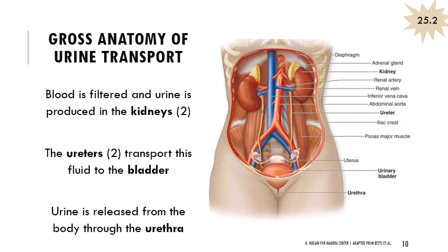Getting into how urine is transported through the body: formation occurs in the kidneys, where blood is filtered and urine is produced. Material flows from the kidneys into the ureters, which transport it to the bladder. The urinary bladder stores urine until it's ready to be released through the urethra. The kidneys are where filtration and production of urine is actually happening.